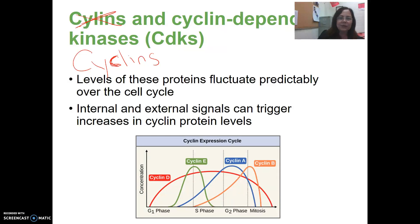There are different cyclins for each phase: cyclin D in G1, cyclin E in S phase, cyclin A peaks in G2, and cyclin B increases and peaks during mitosis.